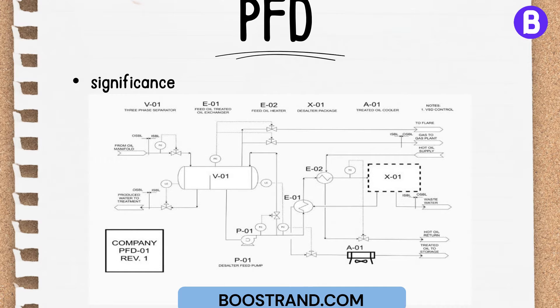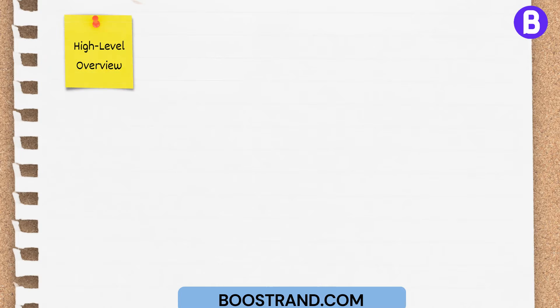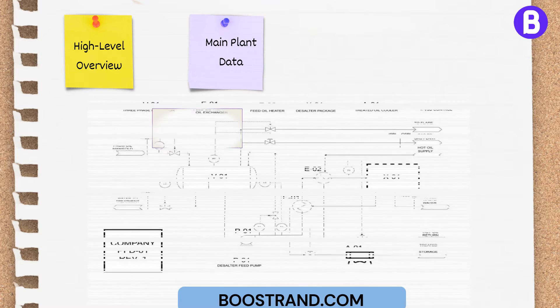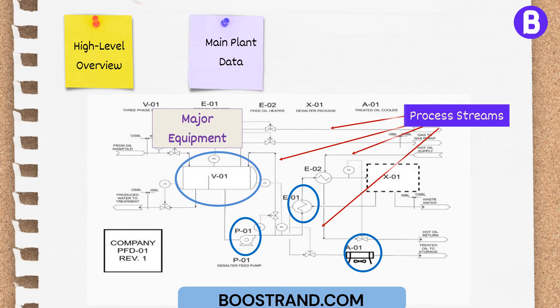In this video, we will delve into the significance of PFDs, their relationship with process simulation, the data they encapsulate, and their role in creating P&ID. A process flow diagram serves as a key document that provides a high-level overview of a process, showcasing the main plant data including the major equipment and process streams, allowing engineers to understand the overall process configuration.